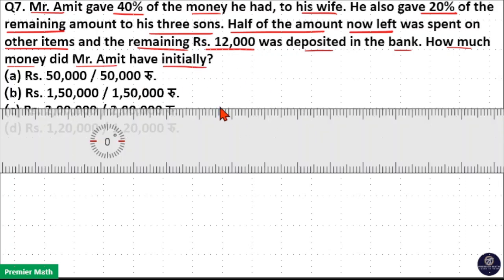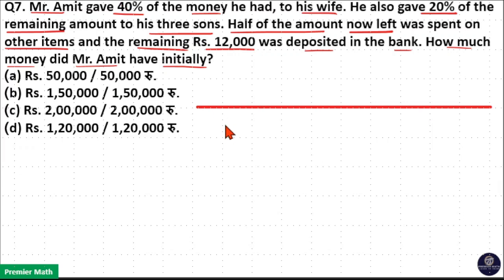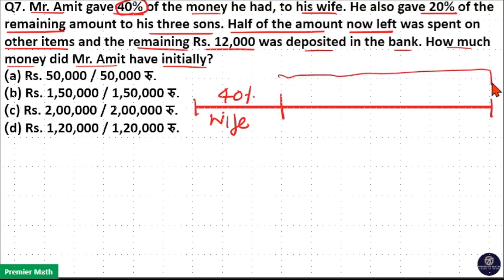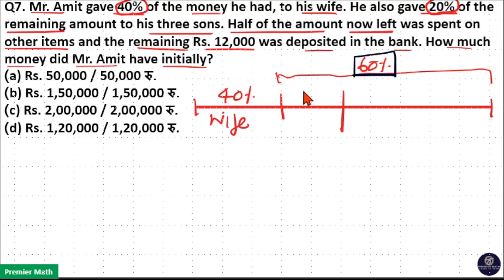Let us consider Mr. Amit had 100% money initially. He gave 40% of the money to his wife, so the remaining is 100 minus 40 = 60%. Out of this 60%, he gave 20% of the remaining amount to his three sons.